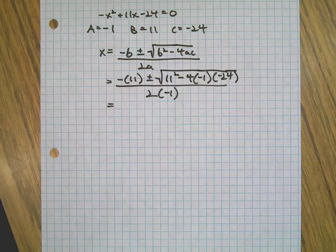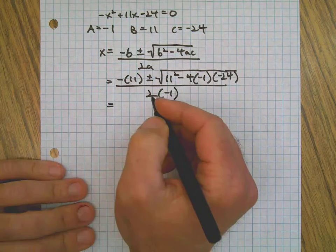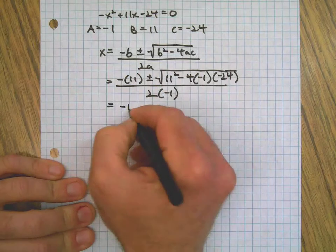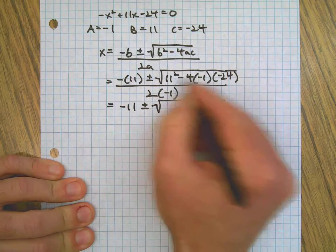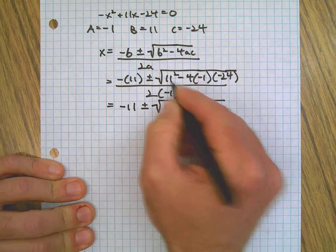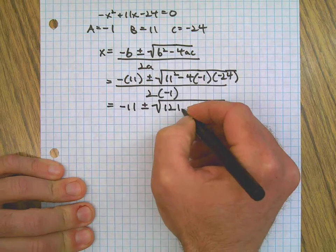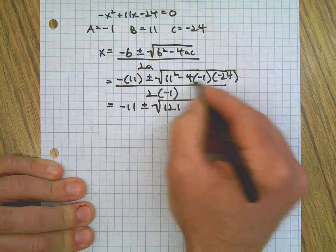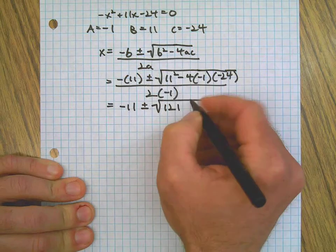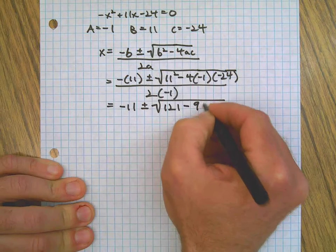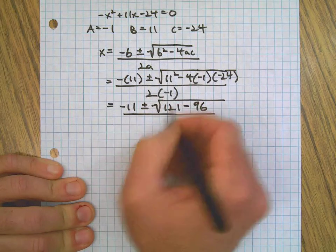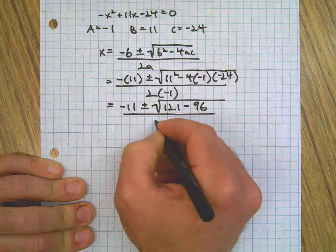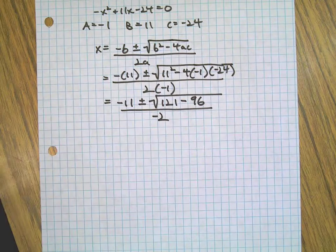Next, we get rid of some parentheses. We do some of the operations inside of our square root sign. We square 11, get 121. We multiply all three of these numbers together which gives us negative 96. All over 2 times negative 1, which is negative 2.